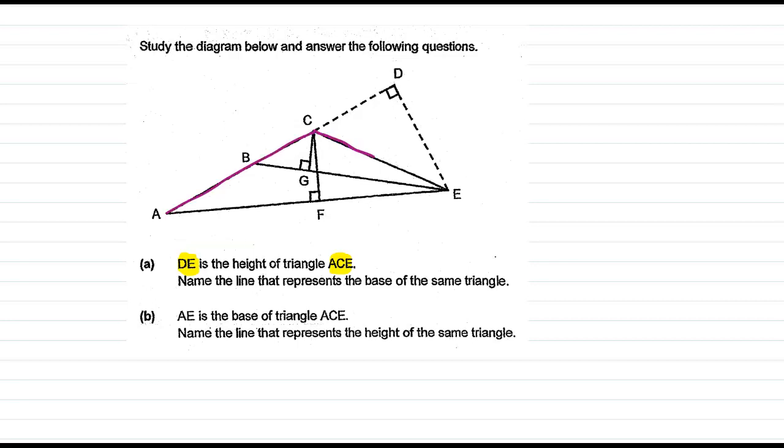A, C, E - so this is the triangle ACE and we have been told that DE is its height.